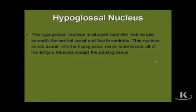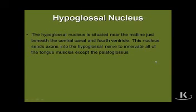The hypoglossal nucleus is certainly as straightforward as any of them — exclusively associated with the hypoglossal nerve and containing all of the lower motor neurons associated with that cranial nerve.